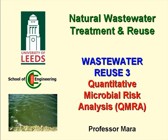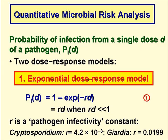We are now going to look at a very important and useful technique in wastewater reuse – quantitative microbial risk analysis, or QMRA. QMRA enables us to determine the probability or risk of infection occurring in a community or an individual as a result of exposure to a single dose D of a pathogen, and we term this risk PID.